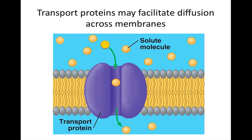Nonpolar hydrophobic molecules can dissolve in the lipid bilayer of a membrane and cross it with ease. Numerous substances that do not diffuse freely across the membrane because of their polarity or charge can move across the membrane with the help of specific transport proteins. When one of these proteins makes it possible for a substance to move down its concentration gradient, the process is called facilitated diffusion. Facilitated diffusion is a type of passive transport because it does not require energy.